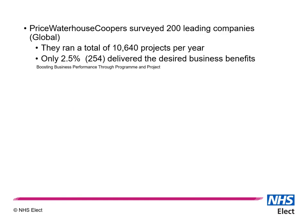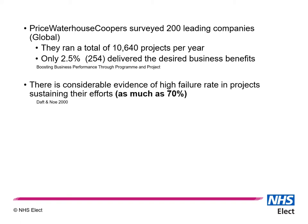However, this is not just a problem within the NHS. Where does this 70% figure come from? If we look externally to the NHS, PwC looked at 200 different companies that ran over 10,000 projects during a year. From those projects, only 2.5% actually delivered the business benefits that they had been identified to do at the beginning. Daft and No in a piece of work from 2000 came up with evidence of a failure rate of as much as 70% in projects sustaining their efforts in the longer term.